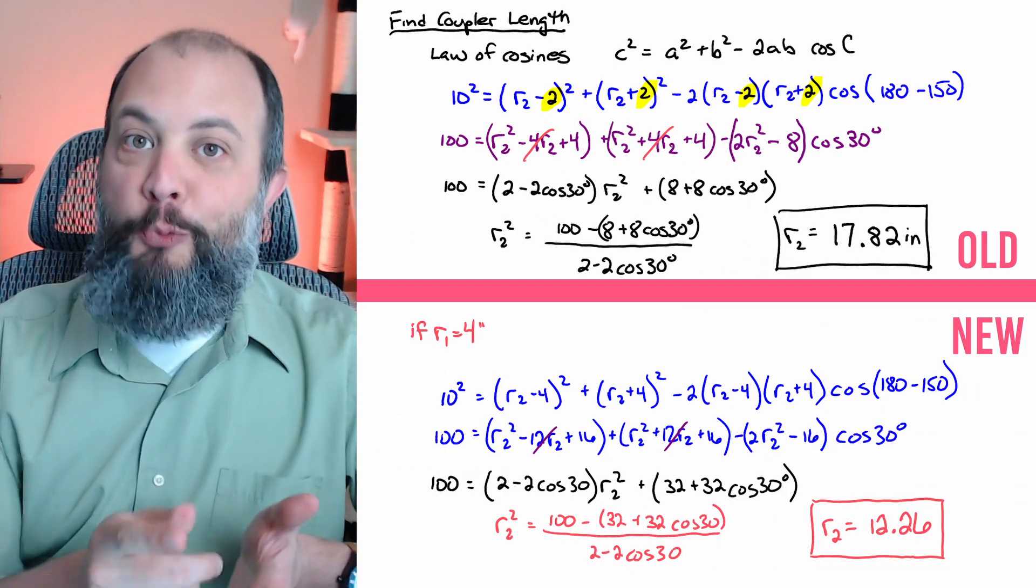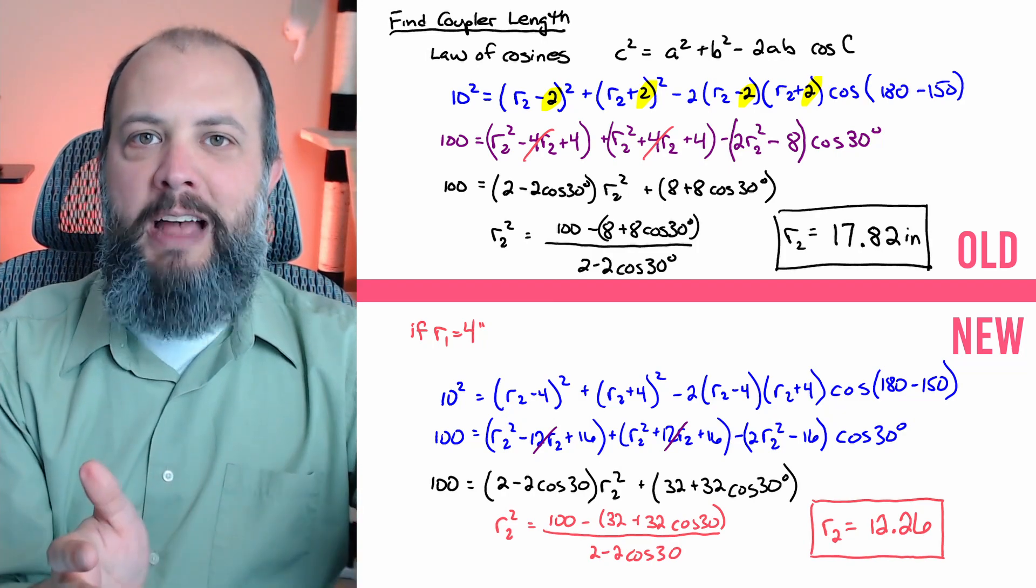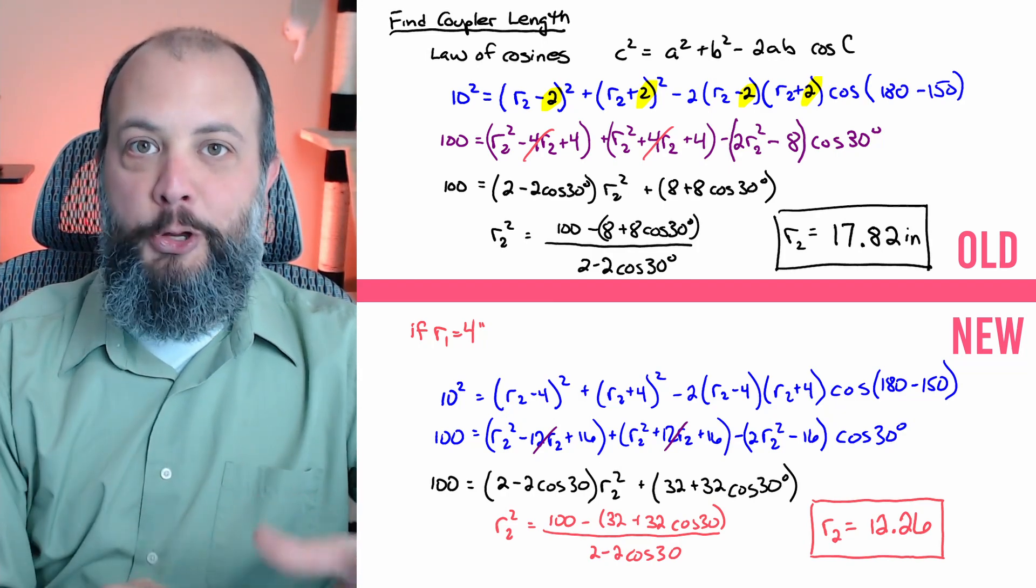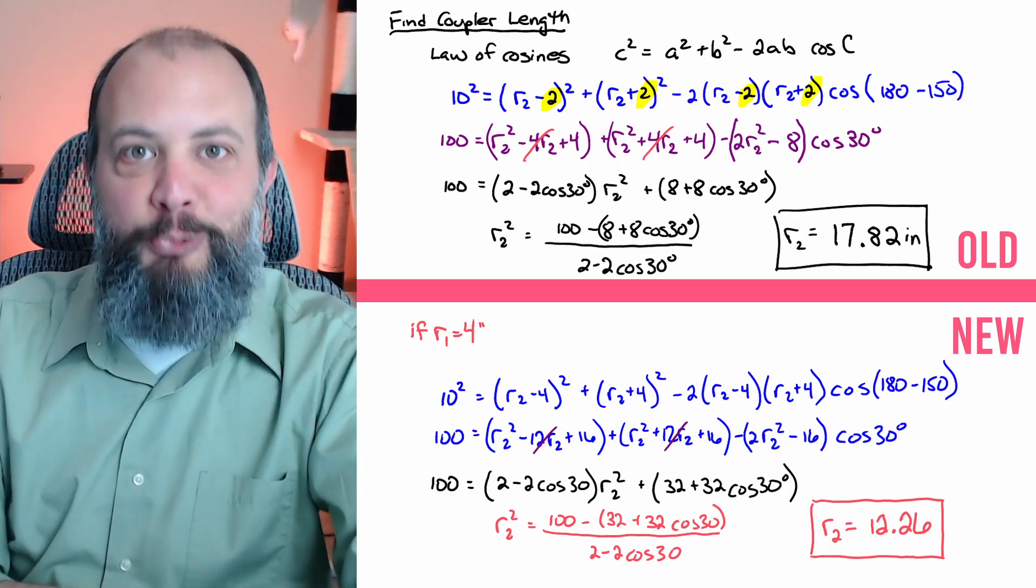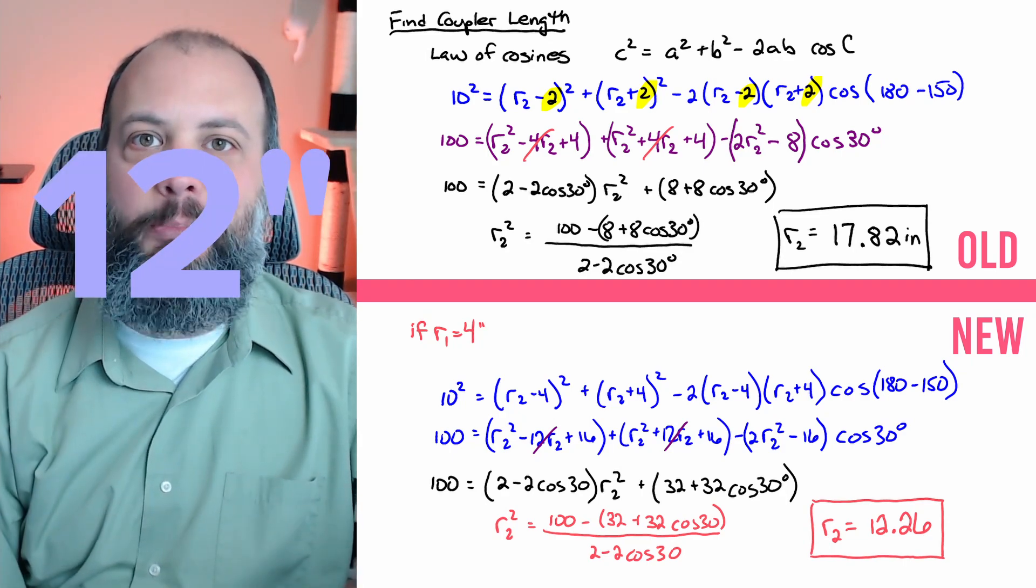The coupler length definitely would change. In general a longer crank is going to result in a shorter coupler because when you have a defined distance that you want the slider to oscillate back and forth between, if the crank already gets you closer to the further point then the coupler doesn't need to reach as far. As here you can see that a 6 inch crank results in only an 8 inch coupler.